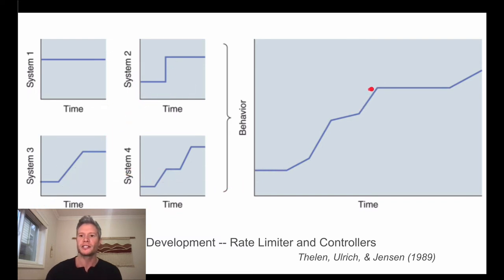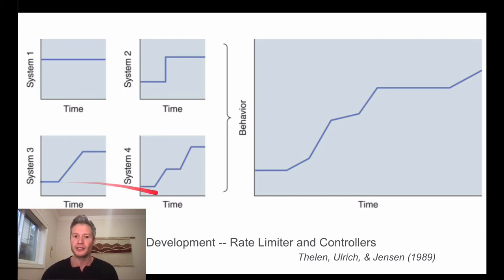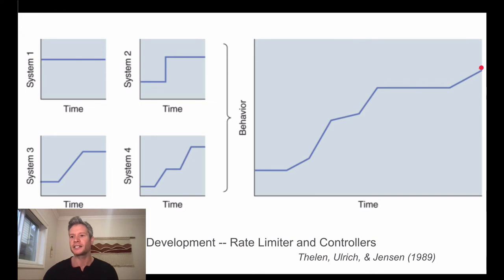To graph this out: imagine four systems over time. The lowest point out of all systems is where we're actually able to produce action and movement. For example, system one might be at a steady level the whole time — let's say that's muscular strength. But systems two, three, and four — balance, visual perception, and motivation — are lower. The capacity to produce movement follows the lowest point. As those lower systems develop and rise, the overall movement capacity builds until all systems reach a plateau at the peak.